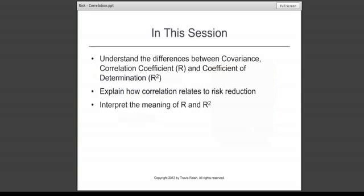In this session more specifically, we're going to look at these three items. We're going to understand the differences between covariance, correlation coefficient, also known as r, and coefficient of determination, also known as r squared. All three of those terms relate to the tendency of two items or two investments to track along with one another. But they express it in different ways and so we have to be comfortable with our understanding of how those three terms differ.